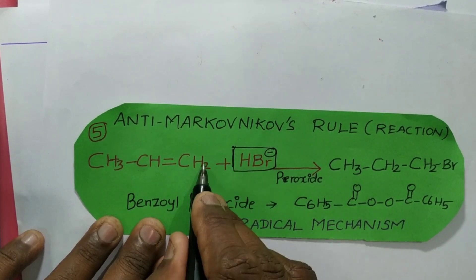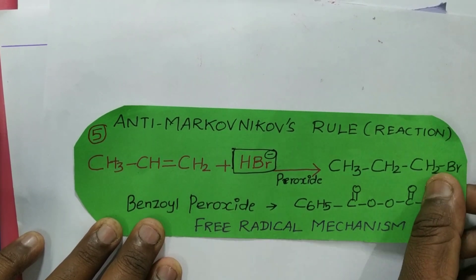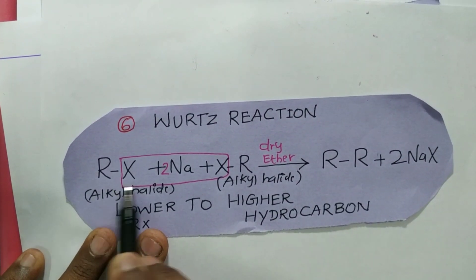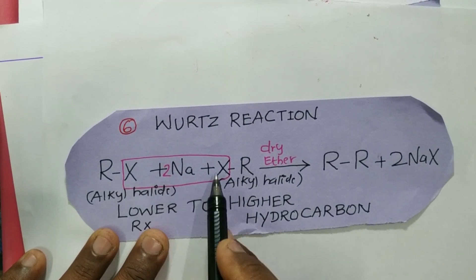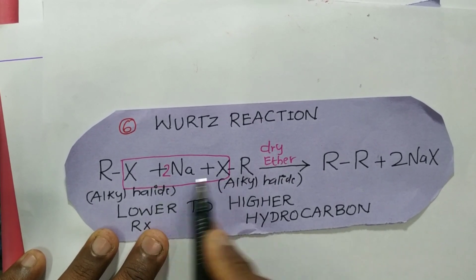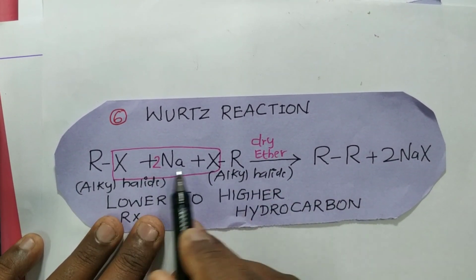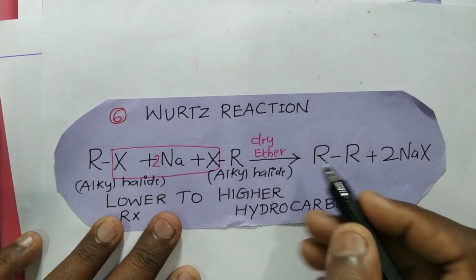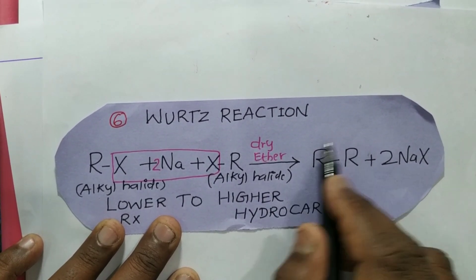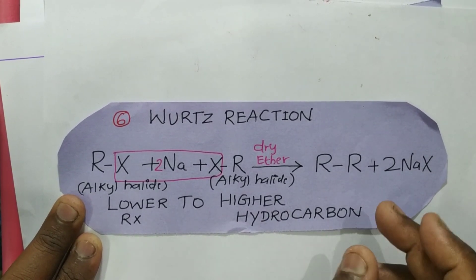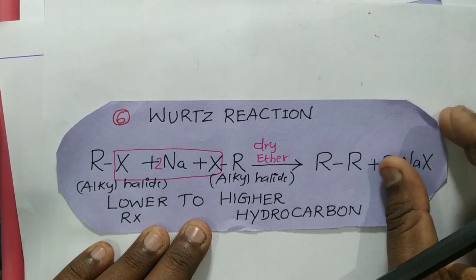Where more hydrogen is present, the Br⁻ will go and approach, giving the anti-Markovnikov product. Next is the Wurtz reaction. Two alkyl halides react in the presence of sodium and dry ether, giving a hydrocarbon as product. Lower alkyl halides can be converted into higher hydrocarbons — that is what the Wurtz reaction says.